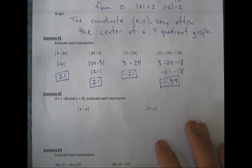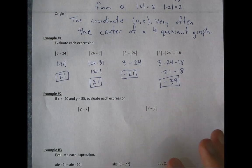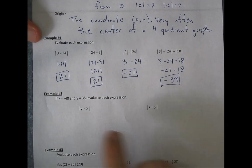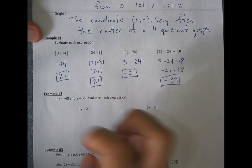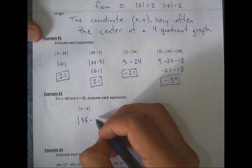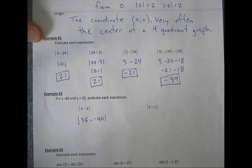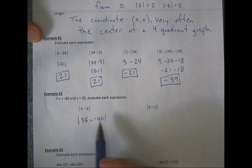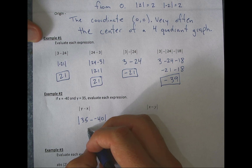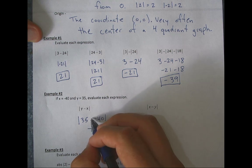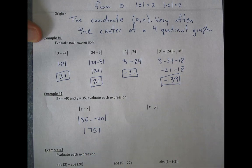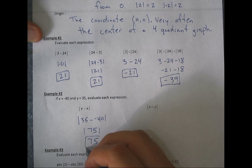Example 2: what does it look like with an algebraic expression? It's very similar — we just plug in for x and y and then solve. With x = −40 and y = 35, we substitute: |y − x| = |35 − (−40)|. Minus a negative is plus, so that's 35 + 40 = 75. The absolute value of 75 is just 75.